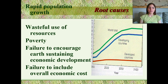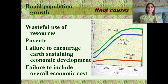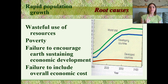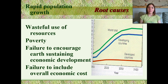We're wasting a lot of resources. Poverty is also a cause. People whose main concern is how am I going to feed myself are not really going to be too concerned about the environment or pollution, because their number one problem is putting food on the table. There's also a failure to encourage earth-sustaining economic development — basically a lack of education and lack of importance.